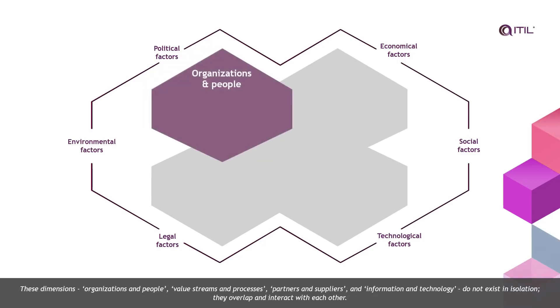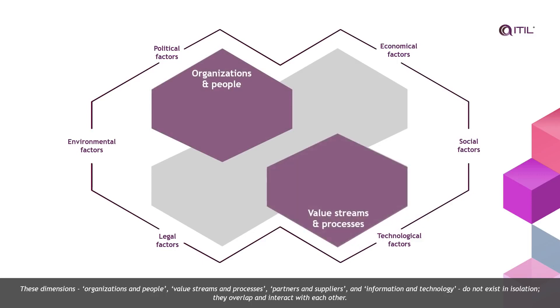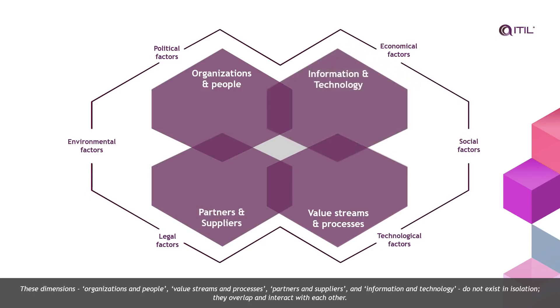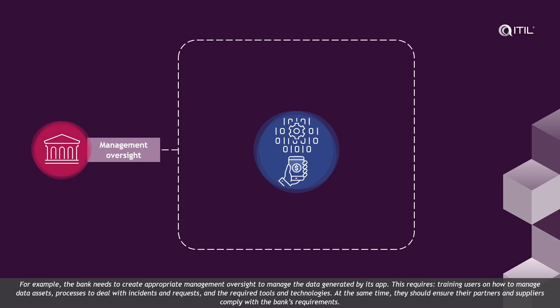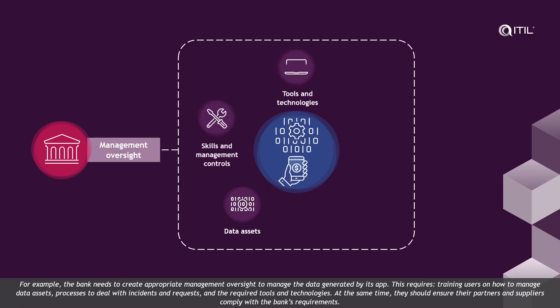These dimensions — organisations and people, value streams and processes, partners and suppliers, and information and technology — do not exist in isolation; they overlap and interact with each other. For example, the bank needs to create appropriate management oversight to manage the data generated by its app. This requires training users on how to manage data assets, processes to deal with incidents and requests, and the required tools and technologies. At the same time, they should ensure their partners and suppliers comply with the bank's requirements.